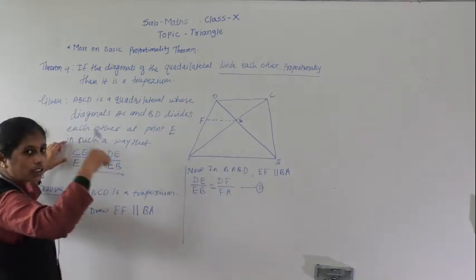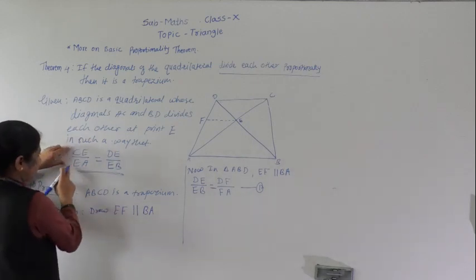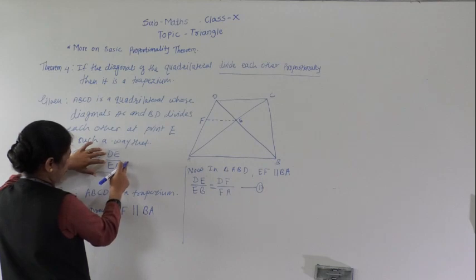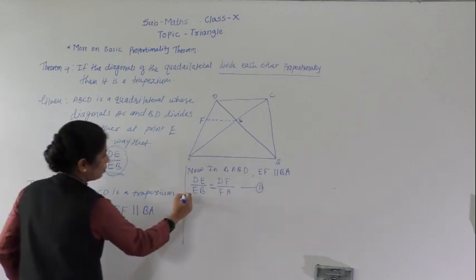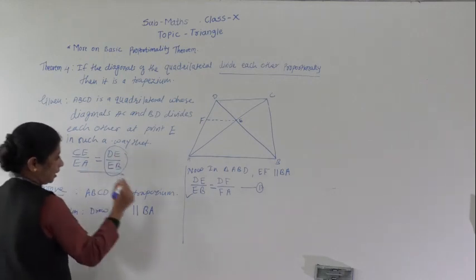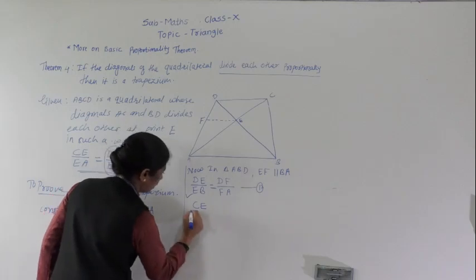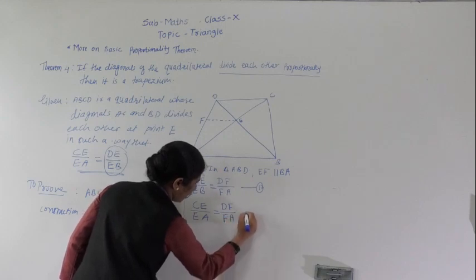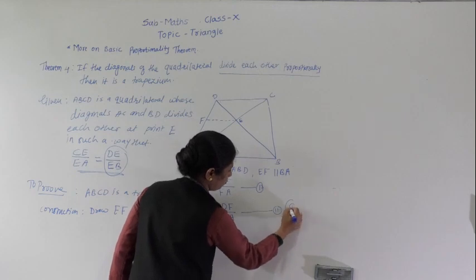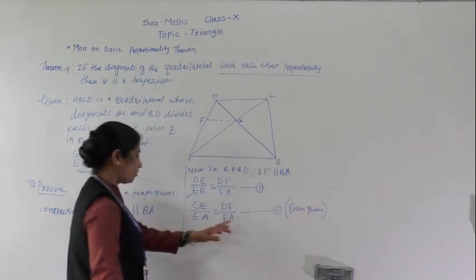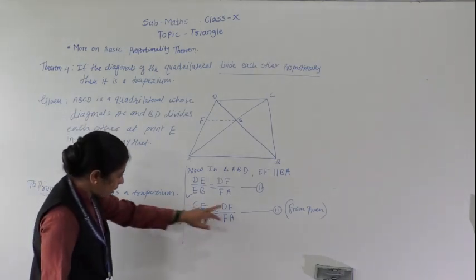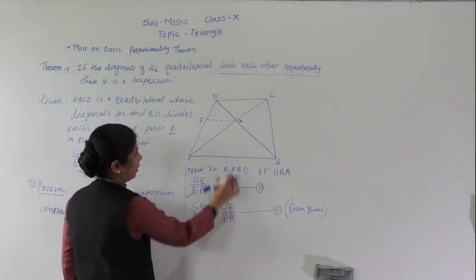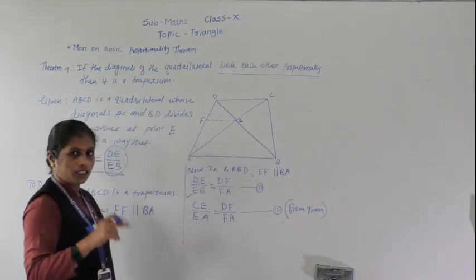From the given, the two diagonals intersect such that CE/EA = DE/EB, which means DE/EB = CE/EA. So we can replace DE/EB with CE/EA, giving us: CE/EA = BF/FA. The reason is from the given.